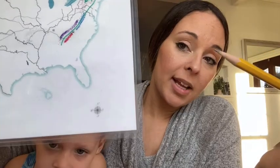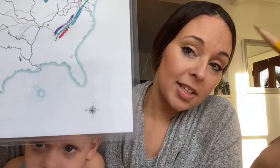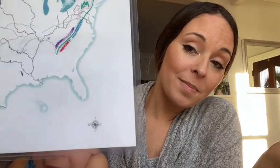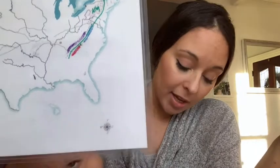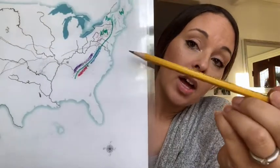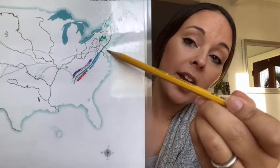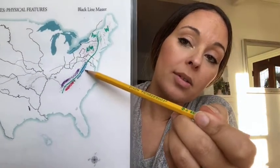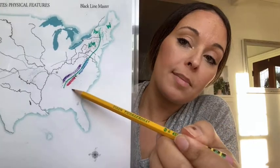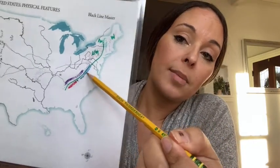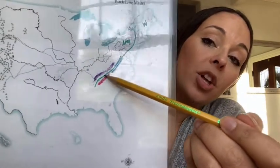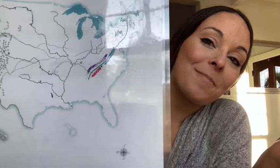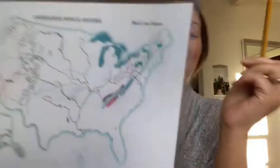Southern Appalachian Mountains, here we come! Southern Appalachian Mountains, here we come! The Great Valley, Blue Ridge Mountains, Smoky Mountains, Cumberland Mountains, and Mount Mitchell — here we come! And that is our geography.